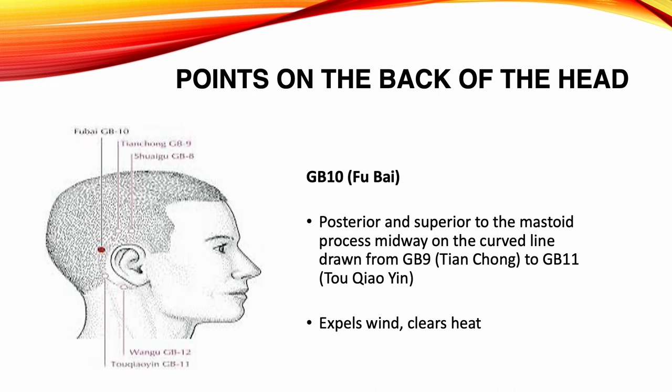Gallbladder 10. Location: posterior to the mastoid process, midway on the curved line drawn from Gallbladder 9 to Gallbladder 11. Functions: expels wind, clears heat. Indications: headache, neck rigidity, tinnitus, deafness, hyperthyroidism.